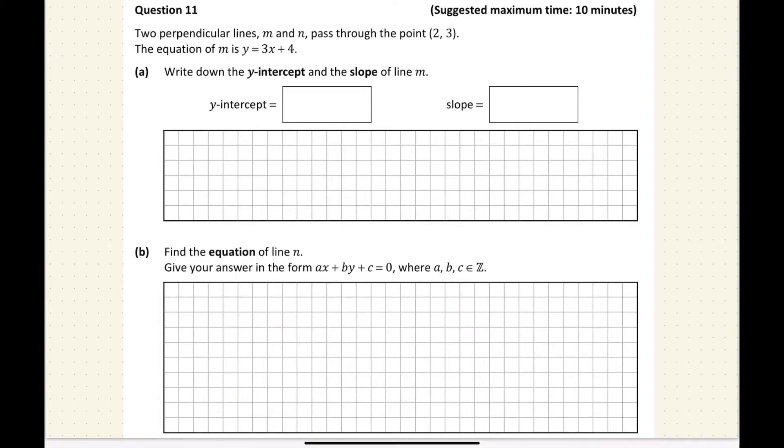Okay, so this is question 11, and it is a coordinate geometry question. It says two perpendicular lines, m and n, pass through the point (2, 3).